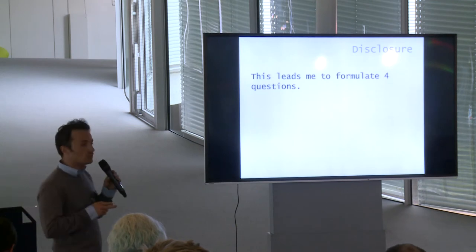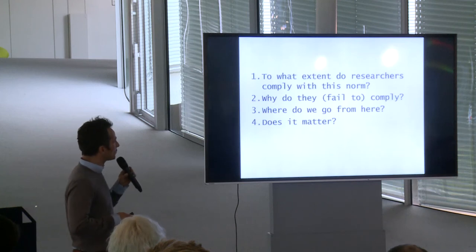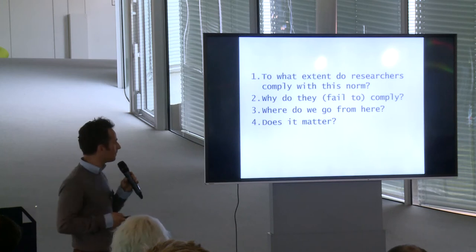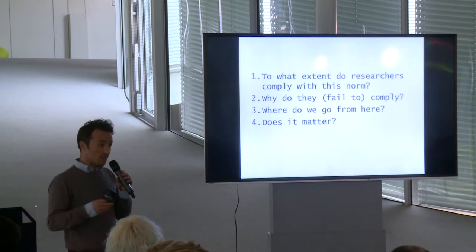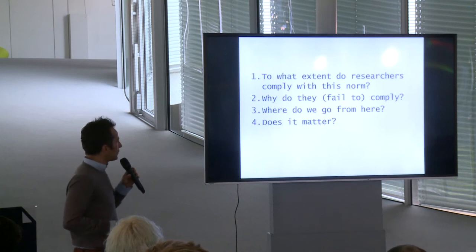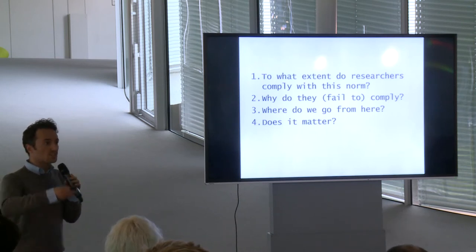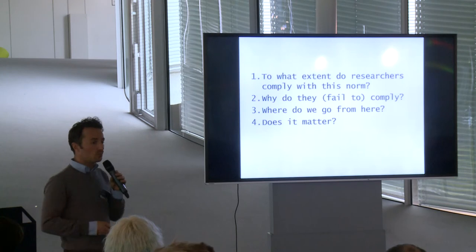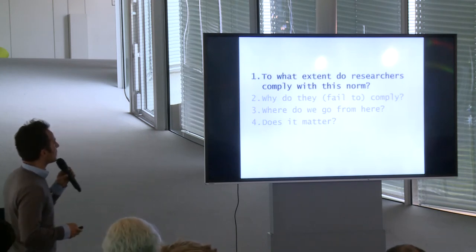This leads me to formulate four questions that I will briefly answer in this talk. Number one: to what extent do researchers comply with the norm of reproducibility? Number two: why do they comply, or why do they fail to comply? Number three: where do we go from here, and what can you do yourself as an individual researcher? And number four: does it matter?